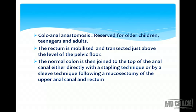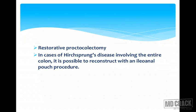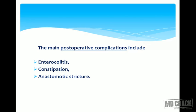Other procedures include colo-anal anastomosis, reserved for older children, teenagers, or adults, where after resecting the aganglionic segment, anastomosis of normal colon directly to the anus is performed. The rectum is mobilized and transected just above the pelvic floor, joined to the top of the anal canal by direct stapling or sleeve technique after mucosectomy. Restorative proctocolectomy with ileo-anal pouch is possible in cases involving the entire colon. Main postoperative complications include enterocolitis, constipation, and anastomotic stricture.